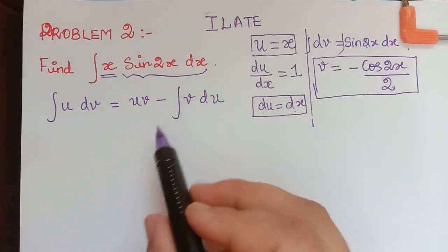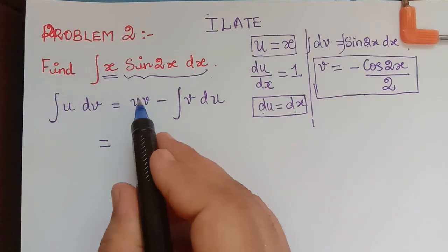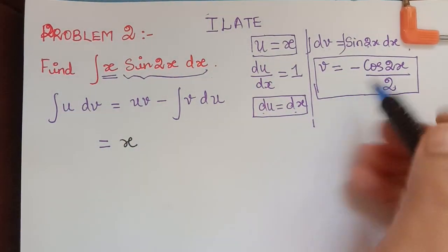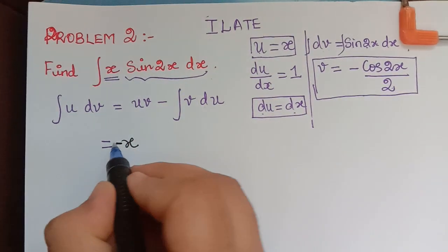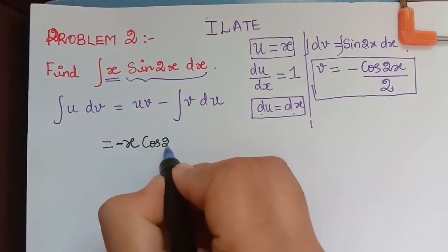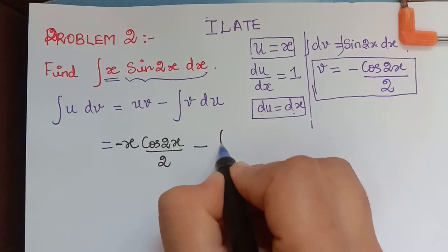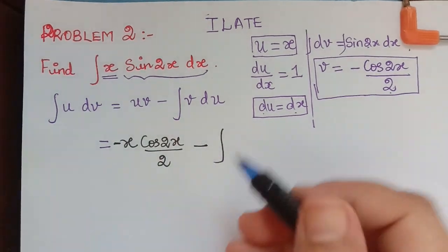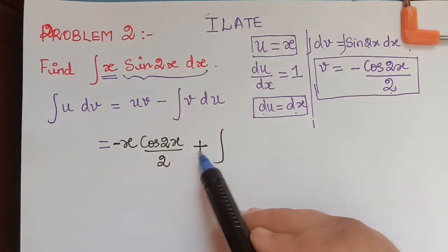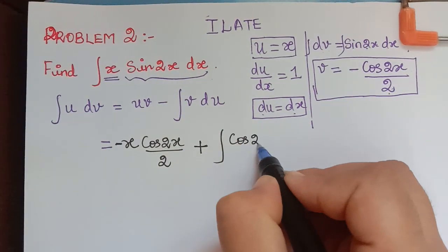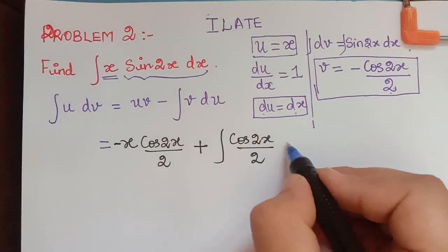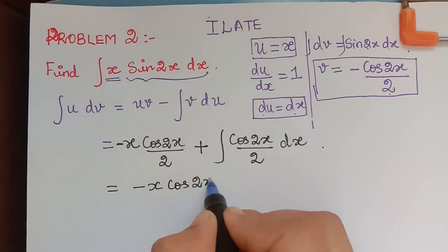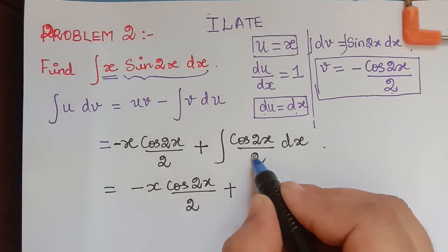Now we have to substitute all three into the formula. That will be equal to u times v: x multiplied with v which is minus cos 2x, so that minus goes to the front — minus cos 2x divided by 2 — minus integral of v. v is minus cos 2x divided by 2, and that minus times minus becomes positive. So it becomes plus integral of cos 2x divided by 2, and du is dx.